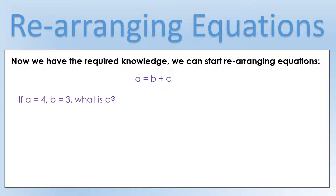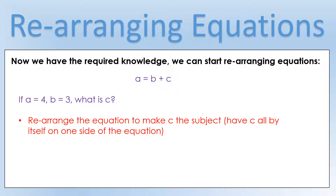Now we have the knowledge to start rearranging equations — let's see how it works in practice. Going back to our general equation: quantity a equals quantity b plus quantity c. If a is 4 and b is 3, what is c? You can probably see straight away that c is 1, but we're going to work through the process so we can handle cases that aren't as simple. To calculate c, we first rearrange the equation to make c the subject — that means having c all by itself on one side. Once we've done that, we substitute in the numbers to calculate c.